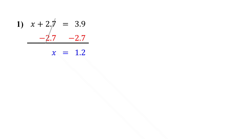This method is super quick if the decimal math is easy, like in this example, or if you can use a calculator. But if you're working by hand and the decimal math gets tricky, it can slow you down and lead to mistakes. That's when the second method really shines.